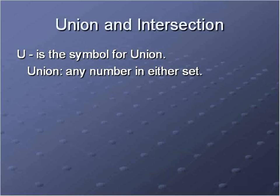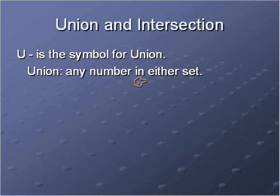Another grouping we do with sets, other than even or odd numbers, is called a union and an intersection. I'm going to talk about unions first, then intersections, and then we'll do some practice questions. Union is represented with a symbol that looks like a capital U — that's an easy way to remember it. In a union of sets, it is any number that is in either set. So given two or three sets, the union includes any number appearing in either one.